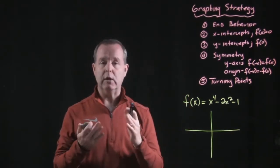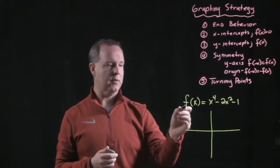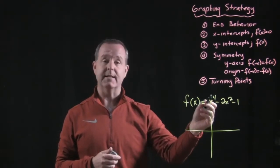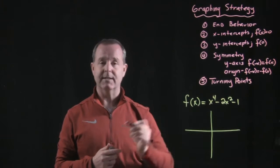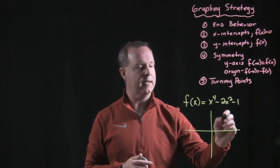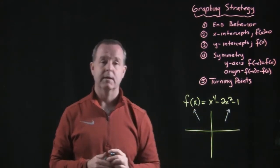First thing we want to do is look for the end behavior of a particular function. So this function right here, what do we know about its end behavior? Highest index is even and it's a positive coefficient. So that tells me then that I have some graph that has end behavior such as that.